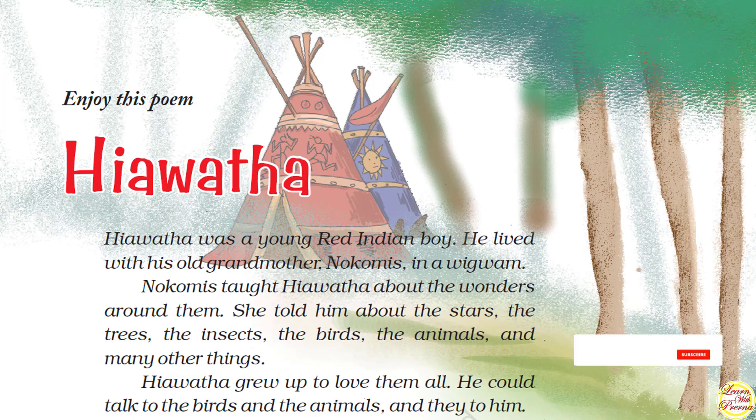Hiawatha was a young red Indian boy. He lived with his old grandmother Nokomis in a wigwam. Who are red Indians? They are basically Native Americans — people born in America. This term 'red Indians' was used by European colonists in the 18th and 19th century for Native Americans based on their skin color. European colonists were the people from Europe who were ruling in America.